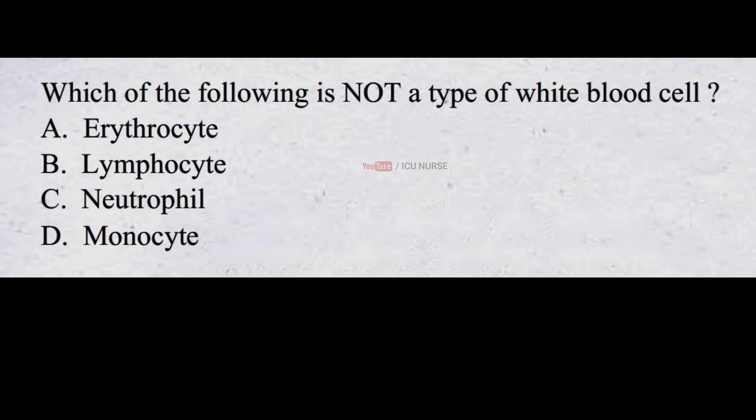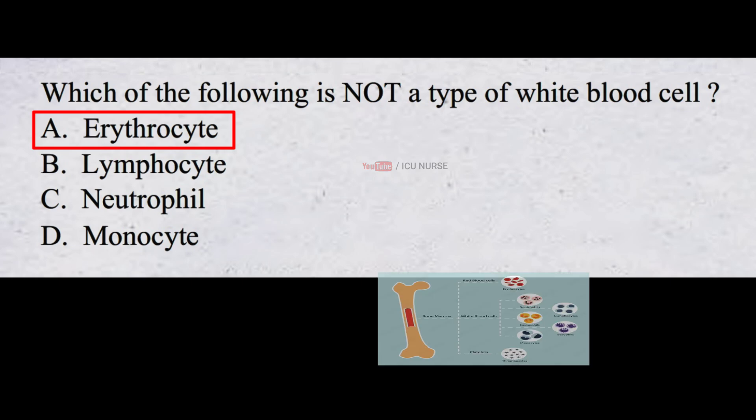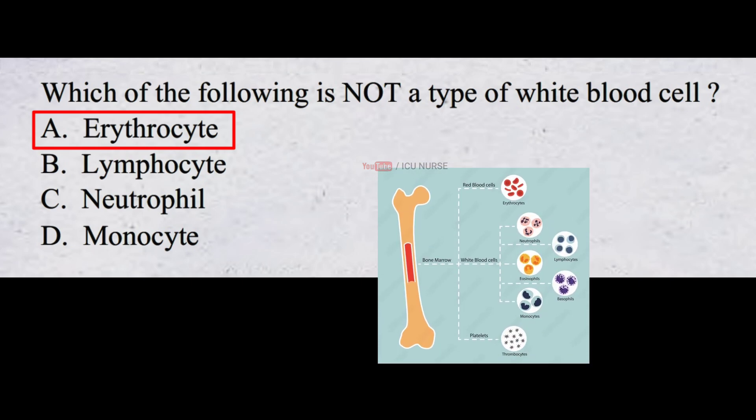Which of the following is not a type of white blood cell? A. Erythrocyte B. Lymphocyte C. Neutrophil D. Monocyte. The correct answer is A. Erythrocyte. Erythrocyte, also known as RBC, is not a type of white blood cell.